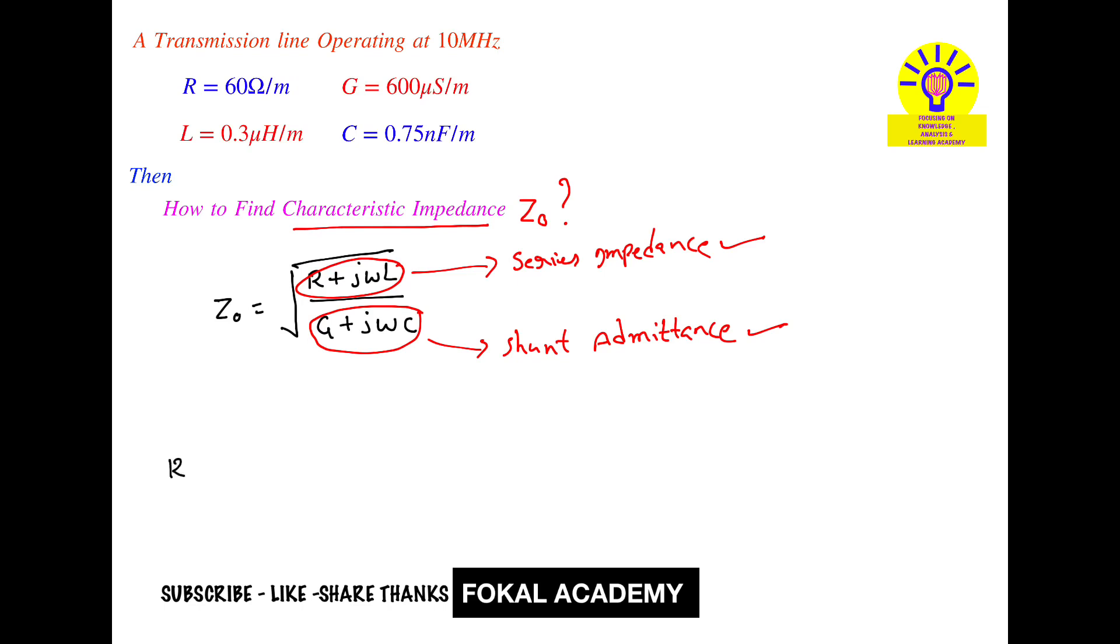For R + jωL, R is given as 60 ohms. Then j times omega, which is 2πf, equals 2 times π times f. The operating frequency f is given as 10 megahertz, which is 10 × 10⁶. Multiply by L, which is given as 0.3 × 10⁻⁶ henry per meter.